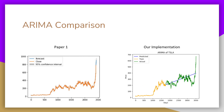This is the ARIMA comparison. We're pretty sure that they used the entire dataset as training data and then predicted over that, which is why it looks so good. What we did instead was train on only half the data and then make a prediction on the other half.